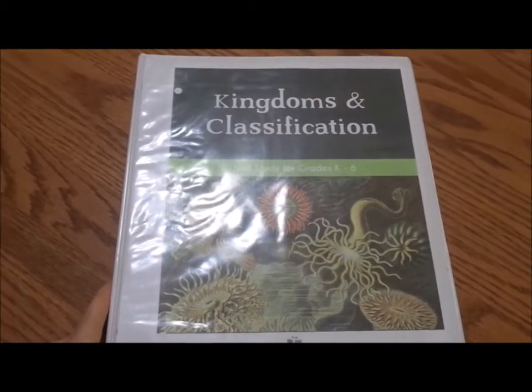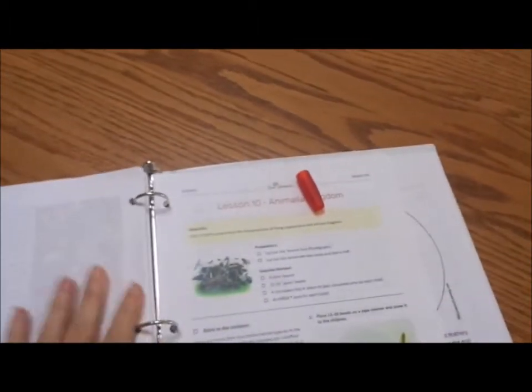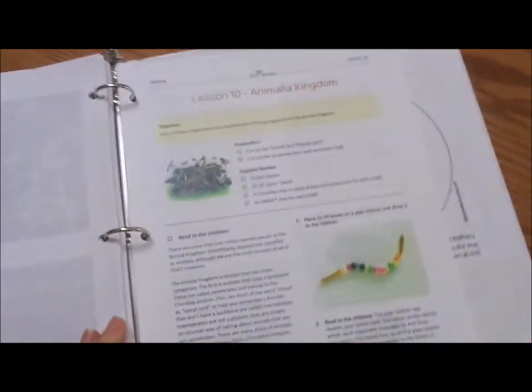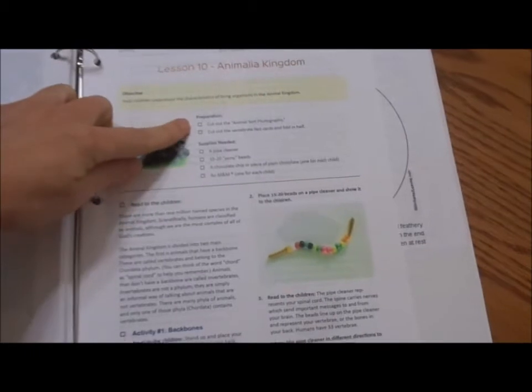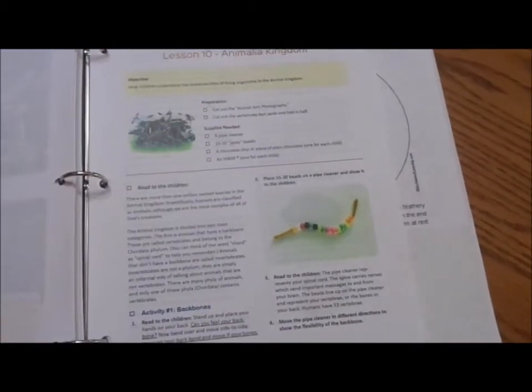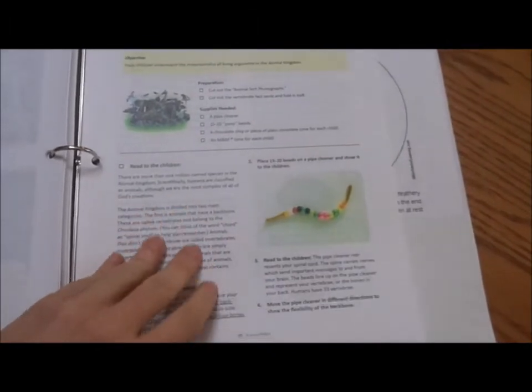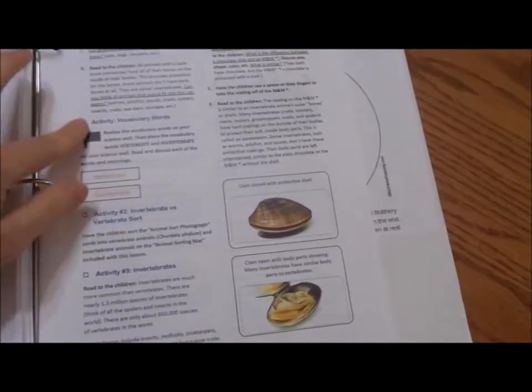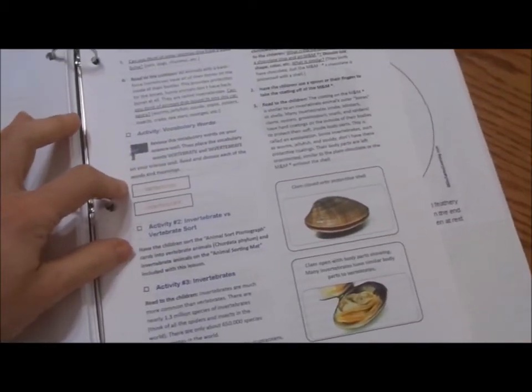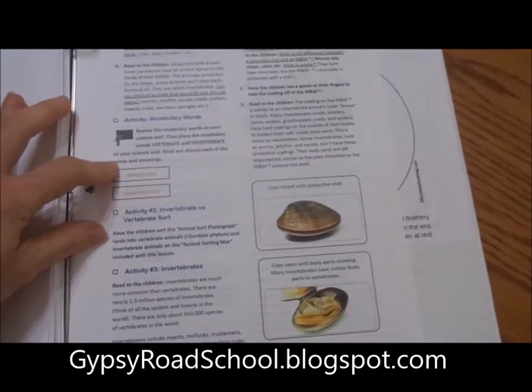In the kingdoms and classifications unit, I'm going to take you all the way to the very end so that you can see how it looks once we get to the end of the lesson. The last lesson in here is about the animal kingdom. Once again it tells us what supplies we need, what we need to prep for. We have different activities, reading out loud, and we're still working with our vocabulary. Even though we go over it all in the first day, we review it periodically throughout the different lessons.